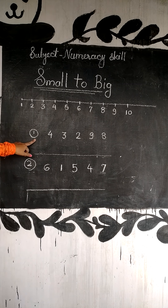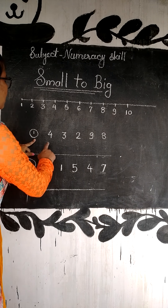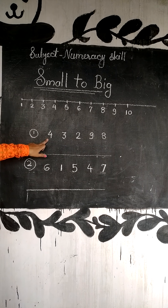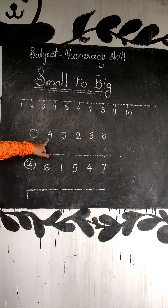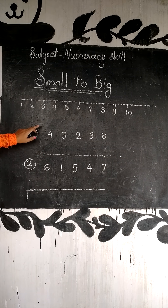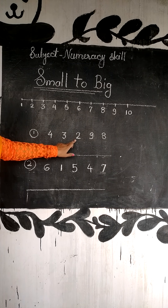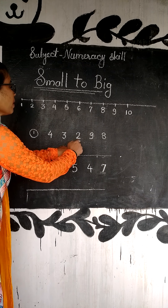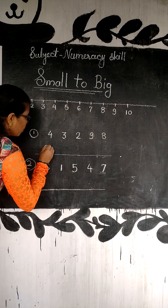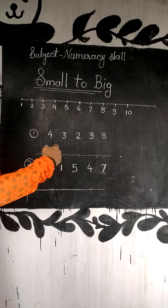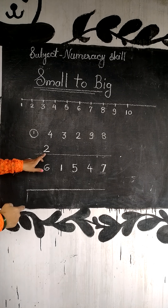Now see students, the numbers we have are 4, 3, 2, 9, and 8. So which is the smallest number? The smallest number of these is 2. So 2 will come first. Small to big means ascending number.